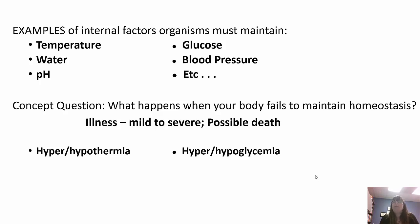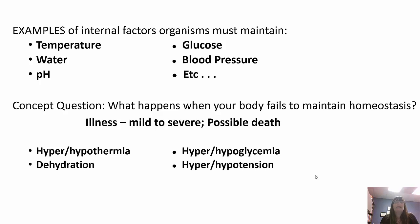When your body fails to maintain homeostasis, it leads to illness — it can be mild or severe and can actually lead to death. Hyperthermia and hypothermia are when you get too hot or too cold. Hyperglycemia or hypoglycemia is when your blood sugar gets too high or too low. Dehydration means you don't have enough water. Hypertension or hypotension means your blood pressure is too high or too low. Diabetic ketoacidosis can lead to a coma because it disrupts your pH.